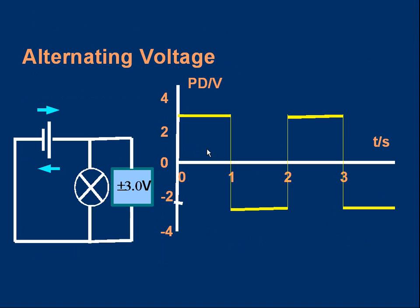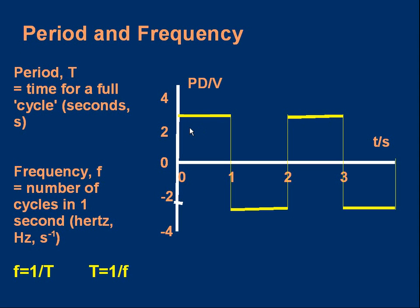The same idea applies to alternating voltage. If I connect a digital voltmeter across a bulb in the circuit, by repeatedly reversing the cell's polarity I could make the voltage change from positive to negative. The digital voltmeter would read plus 3 volts, then minus 3 volts, then back to plus 3 volts, and so on — an alternating voltage.